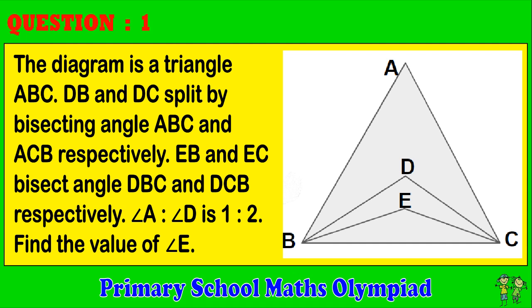Question 1. The diagram is a triangle ABC. DB and DC split by bisecting angle ABC and ACB respectively. EB and EC bisect angle DBC and DCB respectively. Angle A to angle D ratio is 1 to 2. Find the value of angle E.